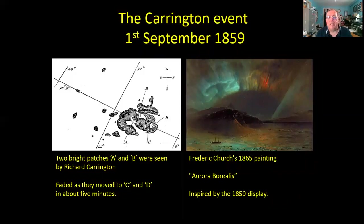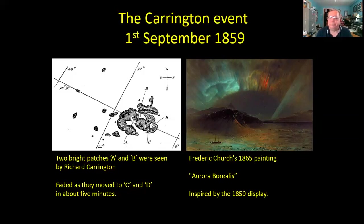This eruption was right in the center of the sun's disk and so it came straight towards us. Thirty-six hours later there were the most magnificent auroral displays across the whole planet. On the right is Frederick Church's 1865 painting of the aurora as viewed from the Caribbean. Normally the aurora is a northern or southern polar-region event only, but when you get a really powerful magnetic storm and a really powerful eruption, it can drive the aurora to much lower latitudes—almost all the way down to the equator.